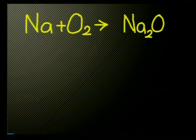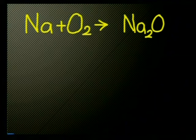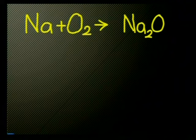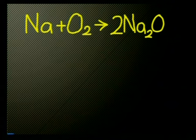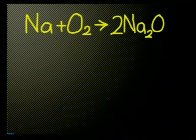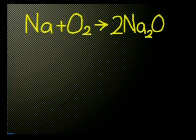Now we need to check if the equation is balanced. Let's start by counting the number of atoms of oxygen. There are two oxygen atoms on the left and only one on the right. To balance this, we need to have two sodium oxide particles in the product. We write a 2 in front of the formula Na₂O. However, we now have four sodium particles on the right and only one on the left, so we need to show that there are four sodium atoms on the left. We do this by writing a 4 in front of the Na.